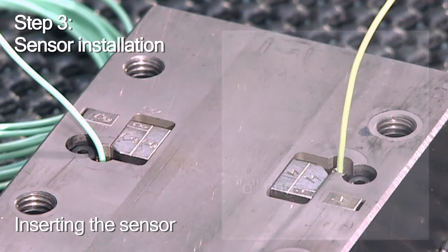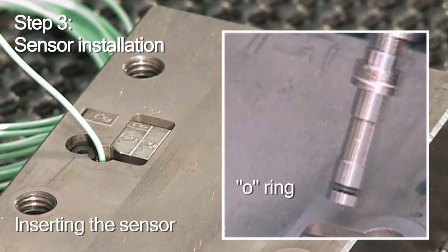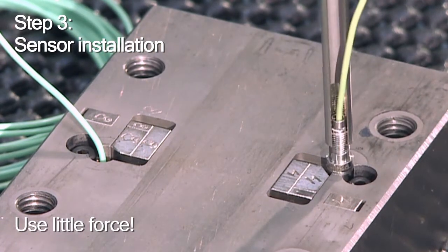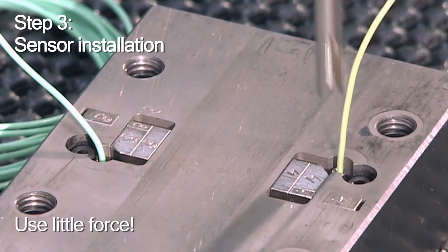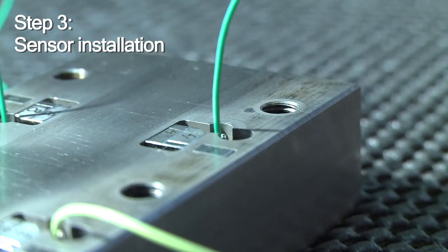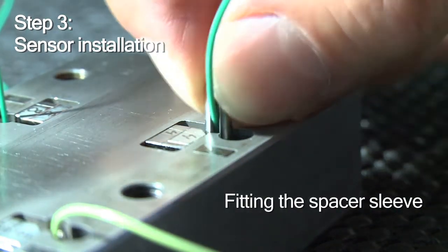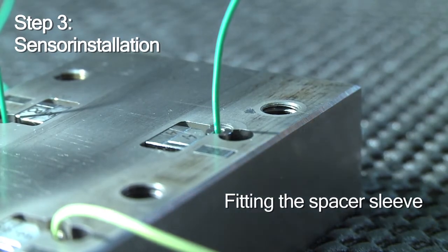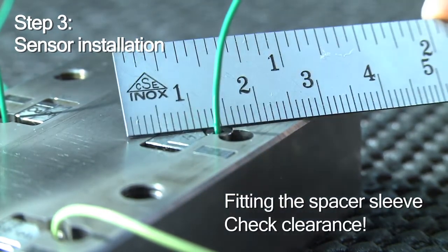However, take special care not to damage the sensor's O-ring. Probe easily. Do not apply any force. Next, you fit your length-adjusted spacer sleeve. Check the clearance with a straight edge or ruler.